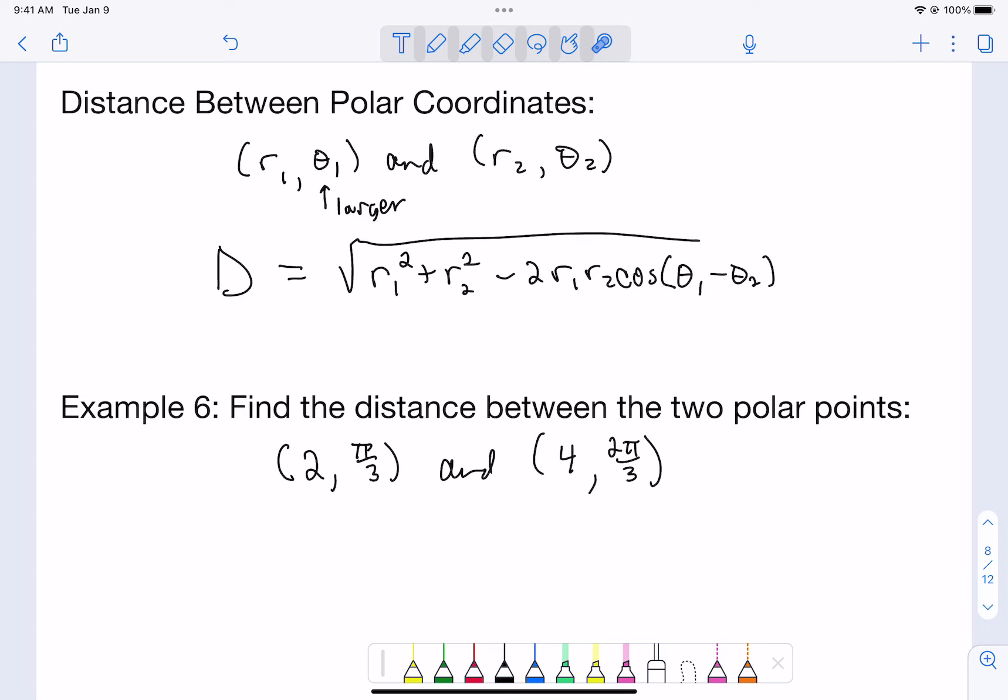Here is example 6. You always want theta 1 to be the larger of the two angles. Make sure for this formula to work, make your theta 1, r 1, your larger angle. Let's plug into the formula. Our larger of the two angles, 2 pi over 3 is bigger than pi over 3. So this one is going to be r 1, theta 1, and this one is going to be r 2, theta 2. Let's go ahead and plug this information into the formula.